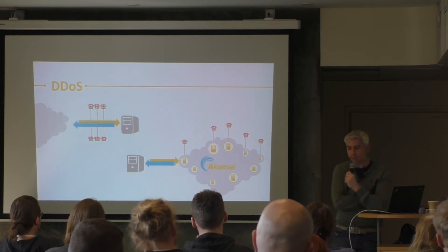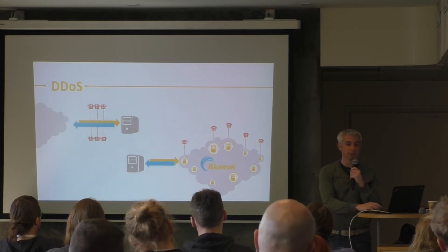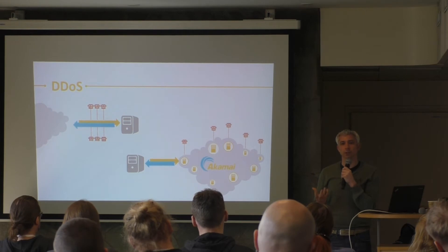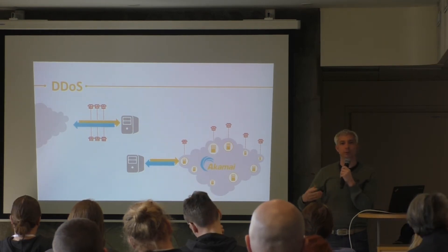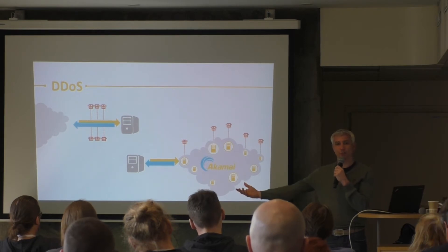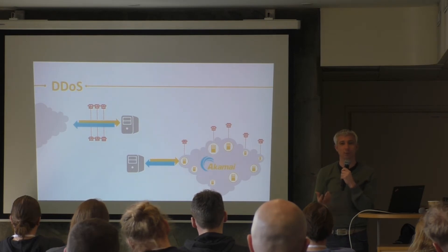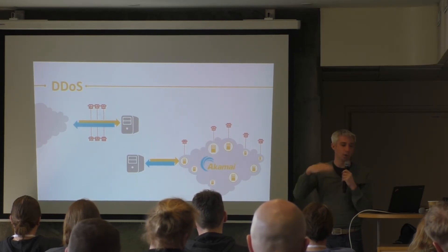We have four scrubbing centers around the world where we take bad traffic and basically put it in a pot and get rid of it. The other advantage is we see billions of requests every day and can collect data about IP addresses. When someone's been doing something malicious on one customer's website and they pop up on another customer's website, we know that's not a trusted IP address and can start blocking it straight away, keeping it well away from your infrastructure.